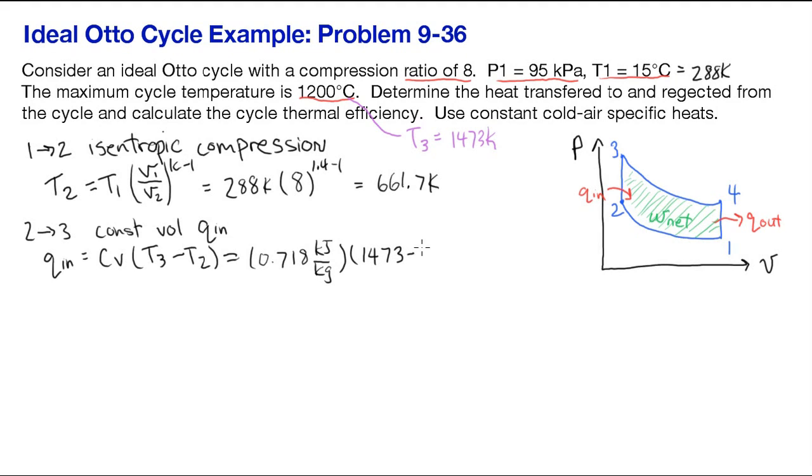CV for air is 0.718 kJ per kilogram. So plugging in these numbers to our calculator will end up with 582.5 kJ per kilogram of heat addition.